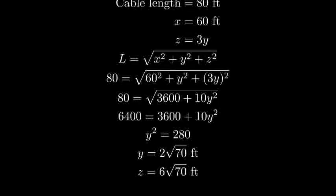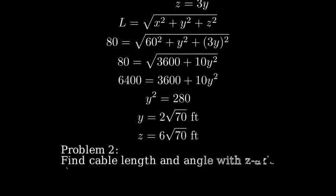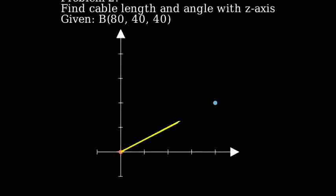For the second problem, we're given specific coordinates for point B: X equals 80 feet, Y equals 40 feet, and Z equals 40 feet. We need to find the cable length and the angle between the cable and the positive Z axis.